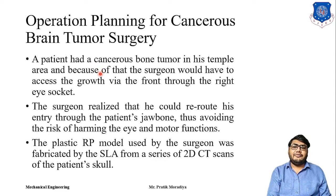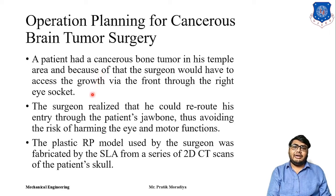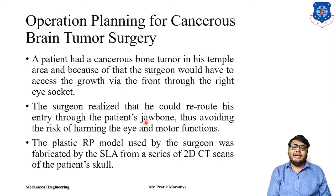There was danger of malfunction of motor function — that is, the movements of the eye, hand, legs, and other physical movements. But the surgeon then used a 3D printed rapid prototyping model and realized that instead of going through the right eye socket, he could operate from the jaw bone also. So the surgeon planned his surgery by observing the 3D printed model of the brain tumor and re-routed his surgery from the eye socket to the jaw bone.